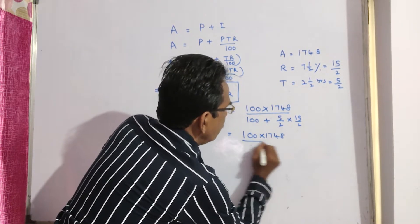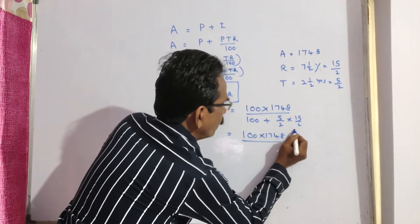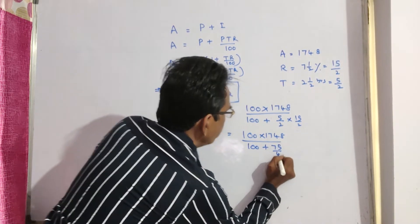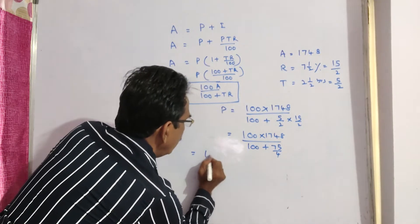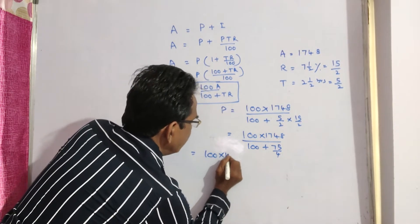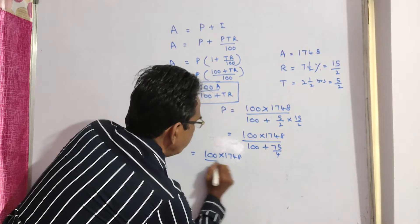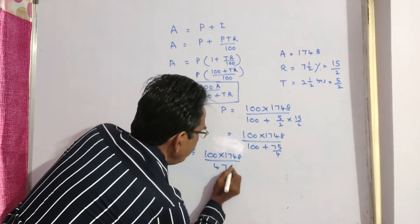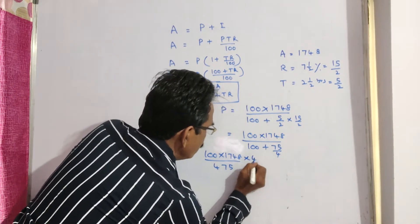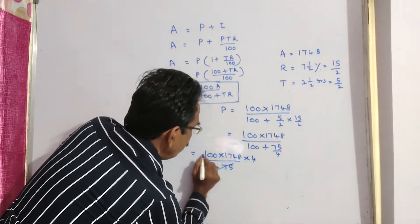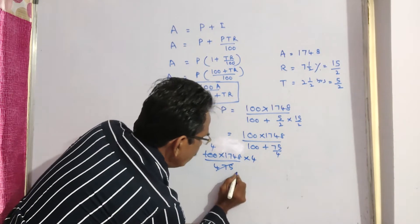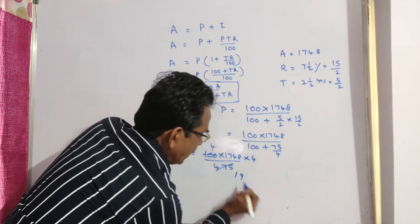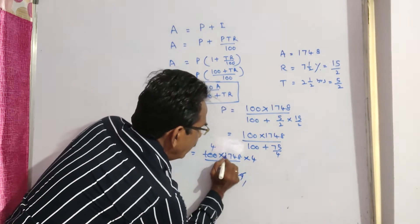100 plus 75 by 4, this is equal to 100 into 1748 by 400 plus 75, 475. This 4 comes to the numerator. See, 25 fours, 25 once, 25, that is 22, 229 to 25, 99, 171, 38, 92.